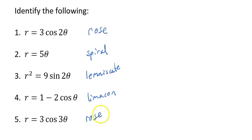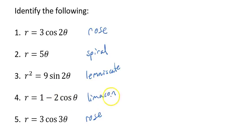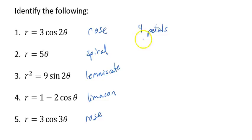Looking at these five: the first one and the last one were roses. The second one, easy to identify, is the spiral. When you have r squared, that's your lemniscate. When you have r and a number plus or minus something, that's your limaçon. For the roses, with n equals two you would have four petals because with even numbers you double it. Number five has n equals three, so it has exactly three petals.